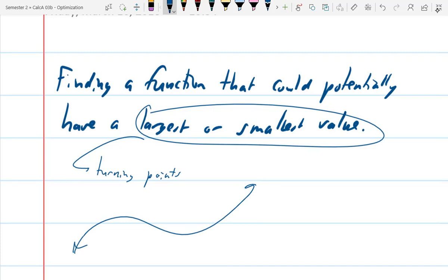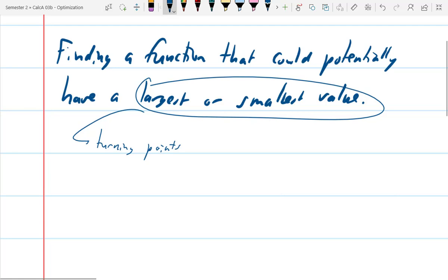So typically our polynomials, if we're going to do polynomials, are going to be ones that have even degree. Because even degree ones are going to squiggle and then open up, or squiggle and then go down, both of them. Odd degrees are the ones that are going to be a little weird. But in any case, turning points are where the first derivative is equal to 0.